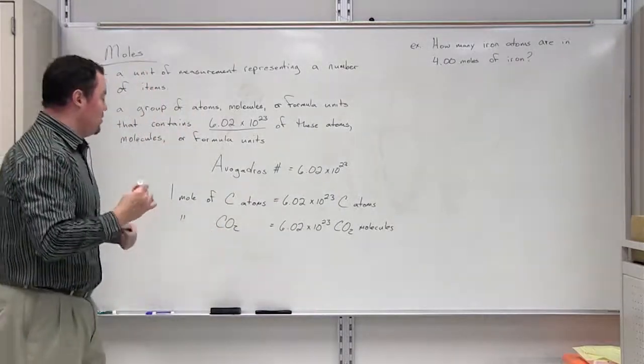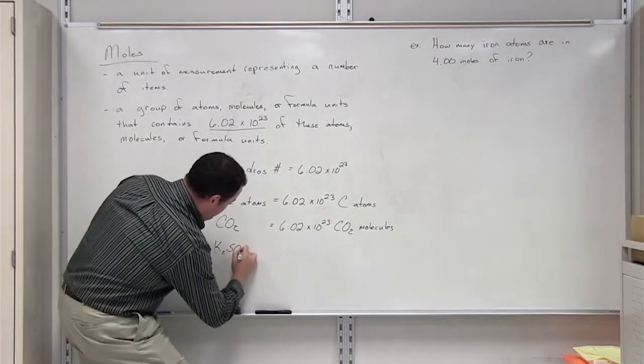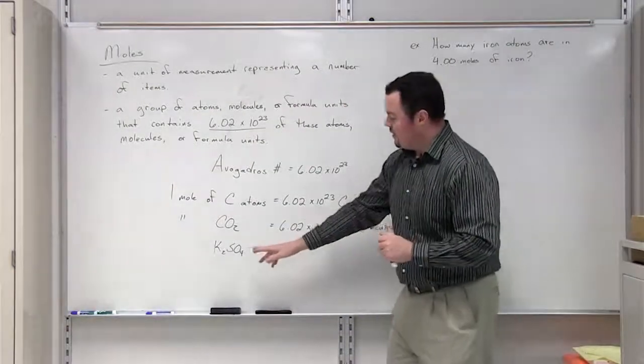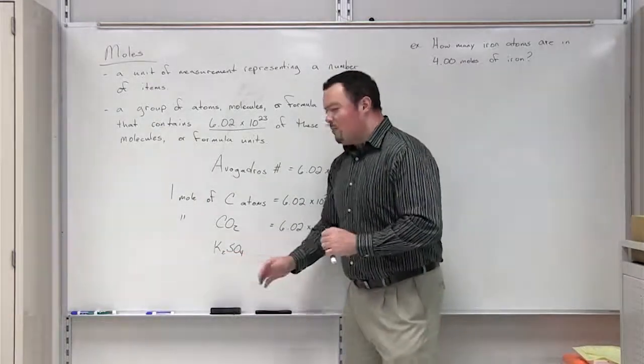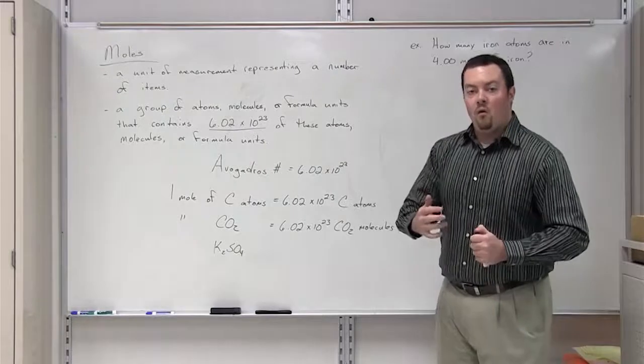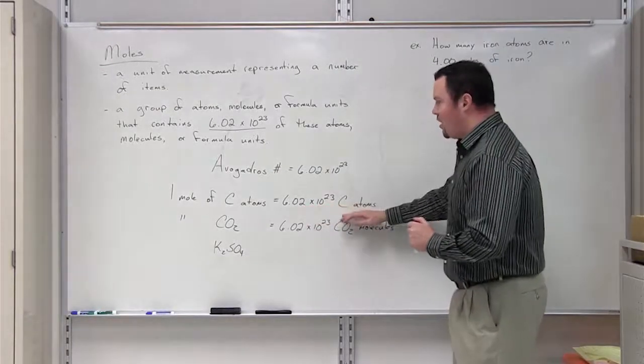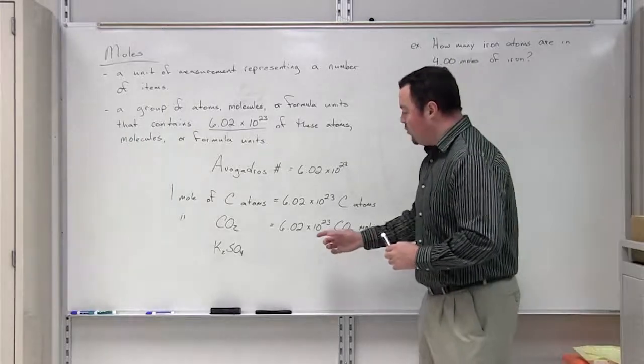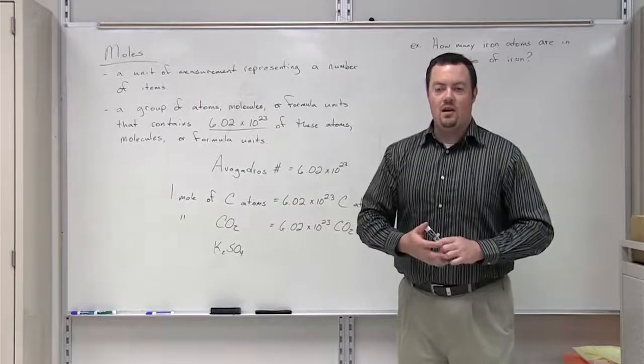An example of a formula unit would be potassium sulfate. Potassium sulfate is made up of a metal, potassium, found on the left side of the periodic table, bound to sulfate, which is known as a polyatomic ion. But in the same way that one mole equals 6.02 times 10 to the 23rd carbon atoms, if I have one mole of a formula unit like potassium sulfate, then I have 6.02 times 10 to the 23rd potassium sulfate formula units.